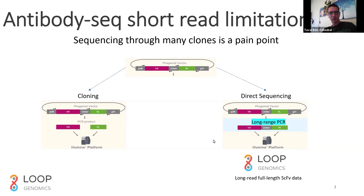The way we're addressing this problem is that you don't need to go through the bottleneck of cloning. You can simply circumvent cloning and directly do long-read sequencing on your phage library, generating accurate long reads directly on the library without cloning. You generate single-molecule long reads that span the entire antibody sequence — the VH, linker, and VL — and you can do this on a regular Illumina platform, generating full-length single-chain SV data with extremely high accuracy. For example, generating 20,000 scFv full-length sequences, which would normally require cloning 20,000 isolates one by one, can now be done by directly sequencing the phage vector library with long-read sequencing.